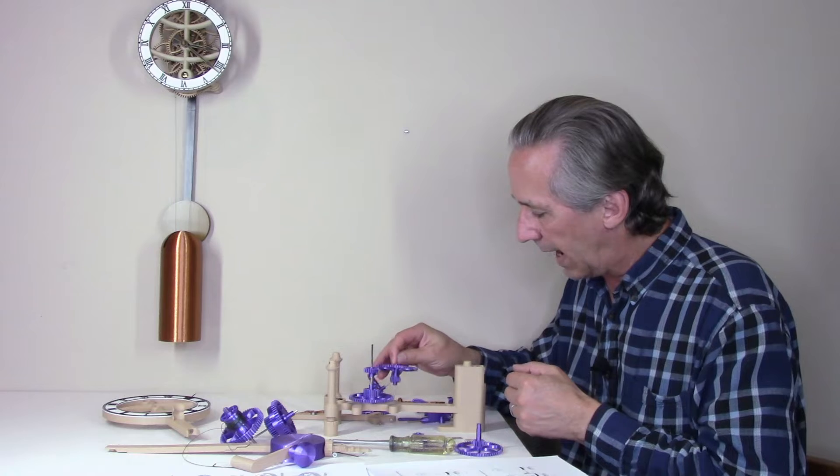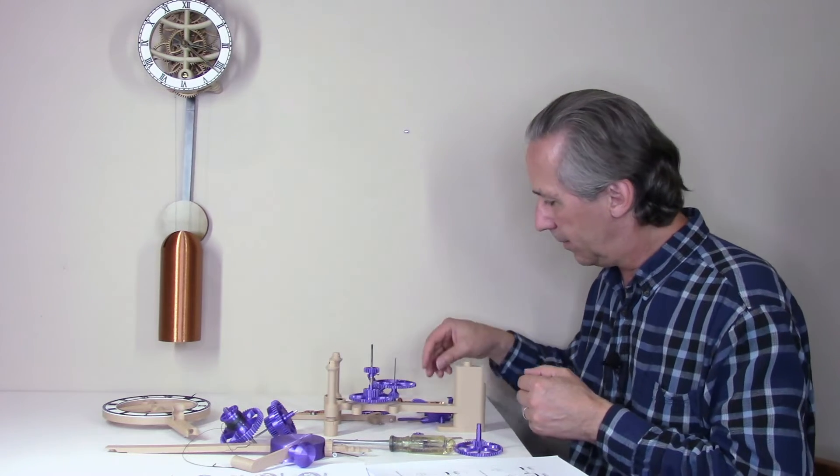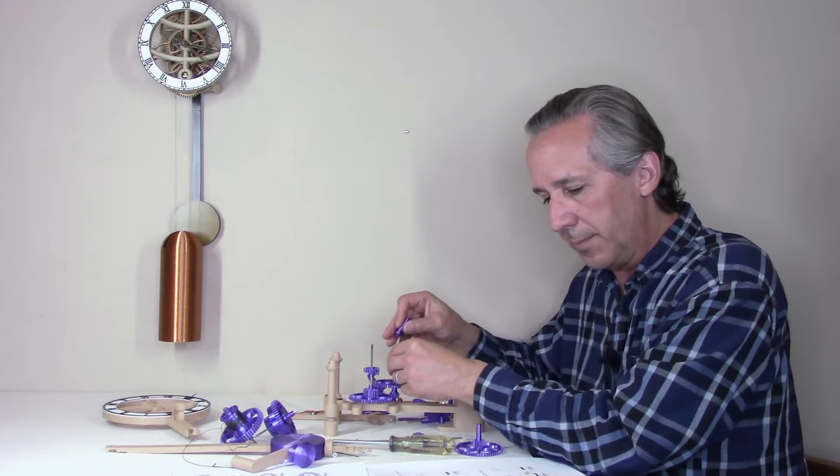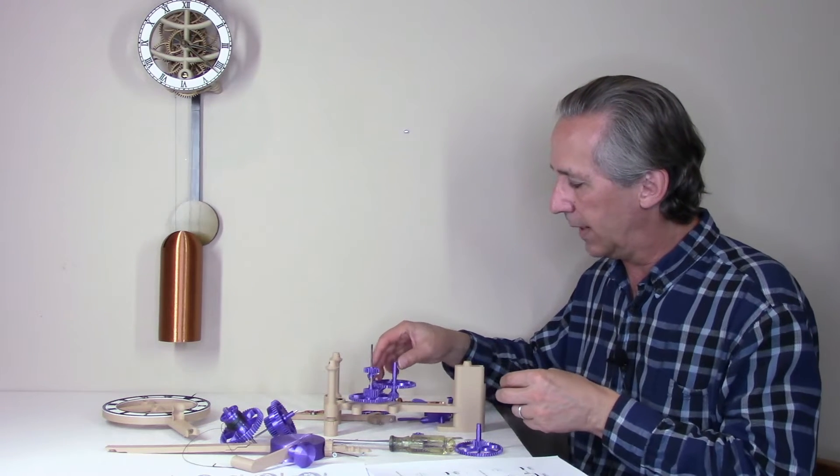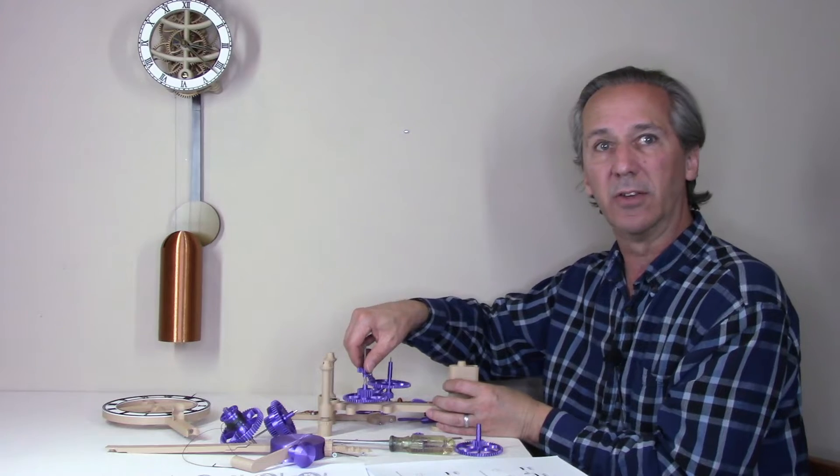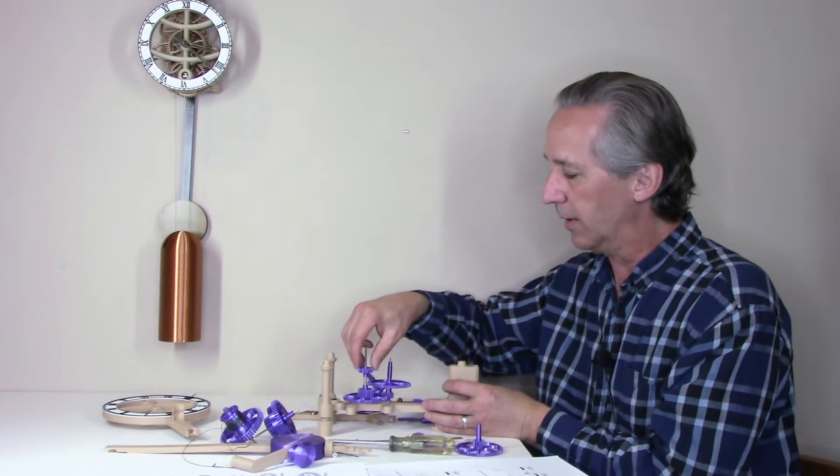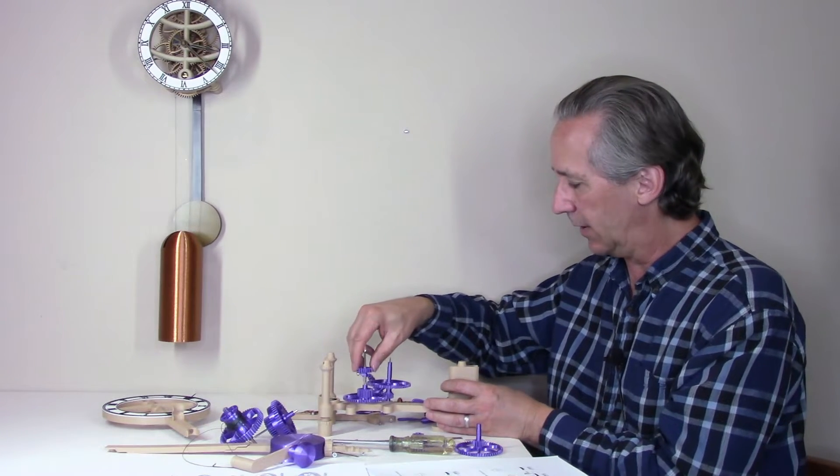Start by adding gear 3 and an arbor and spacer 3, and you can see when you spin the minute hand arbor the other gear spins easily.